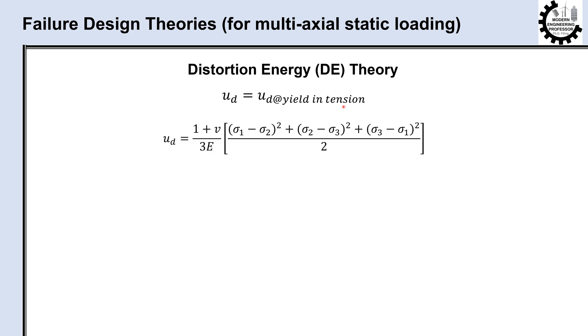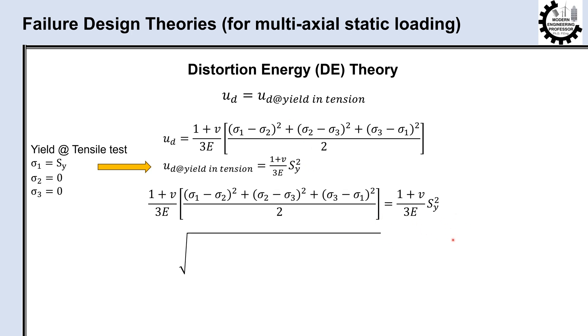Now let's calculate the distortion energy at yielding during a tensile test. For the tensile test at yield, we have sigma 1 equals Sy, and sigma 2 and sigma 3 are zero. Substituting these values in the distortion energy equation, then equating and cancelling out the constants, and taking the square root of each side gives the following equation, which is the mathematical representation of yield failure in ductile materials according to this theory.